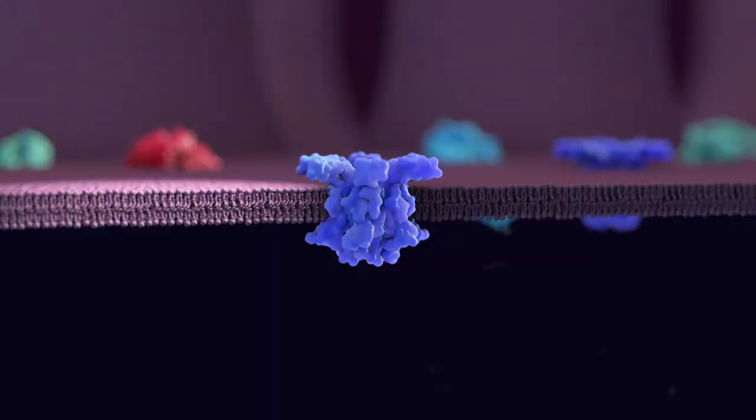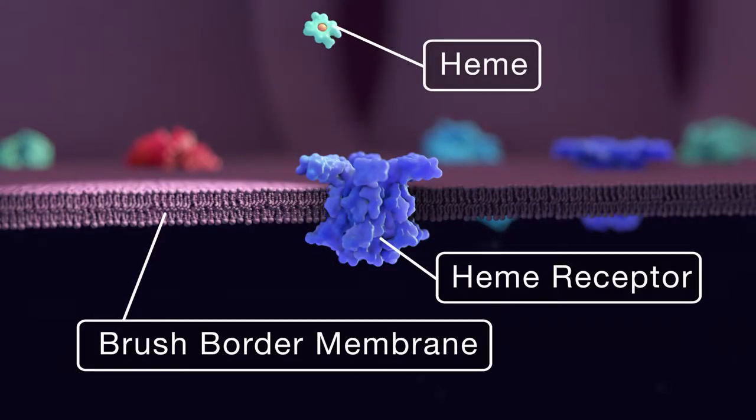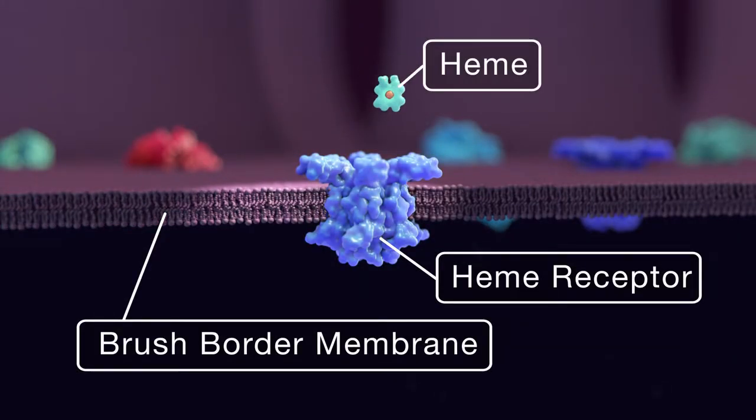Here, there are two separate processes for the intestinal absorption of heme and non-heme iron.